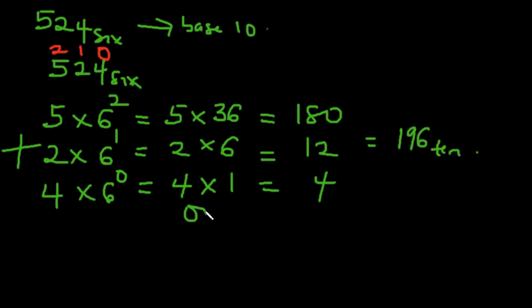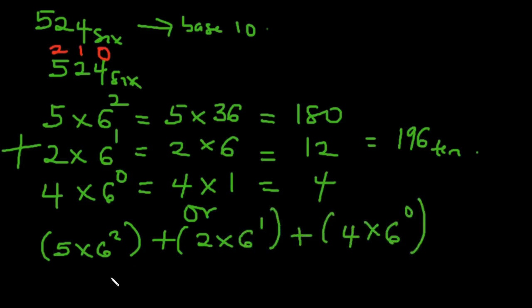You can write it like this, but I like to write it this way because it reduces my chances of making mistakes while calculating. So: 5 multiplied by 6 squared, plus 2 multiplied by 6 to the power of 1, plus 4 multiplied by 6 to the power of 0. It's still going to be the same thing: 180, 12, 4. So I have 196 in base 10.